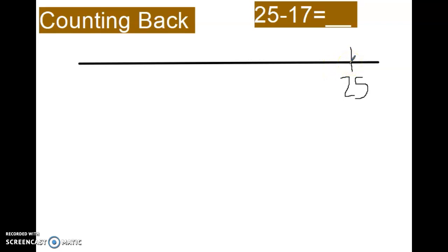I would divide this up by 10 and 7 to subtract. So 25 minus 10 would be 15. If I get back to 15, then I still have to take away 7.